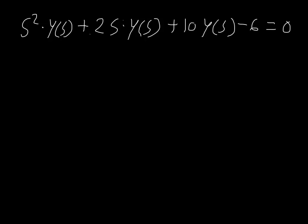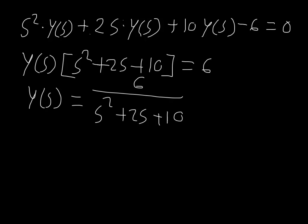So what we have here is s squared times y sub s, plus 2s times y sub s, plus 10 times y sub s, minus 6 is equal to 0. So what we can do is we can group like terms and put that negative 6 on the other side. So what we have here is y sub s times s squared plus 2s plus 10 is equal to 6. Now we can solve for y sub s here. Just divide both sides by that polynomial. So we get that y sub s is equal to 6 over s squared plus 2s plus 10. And now we have a term for y sub s.